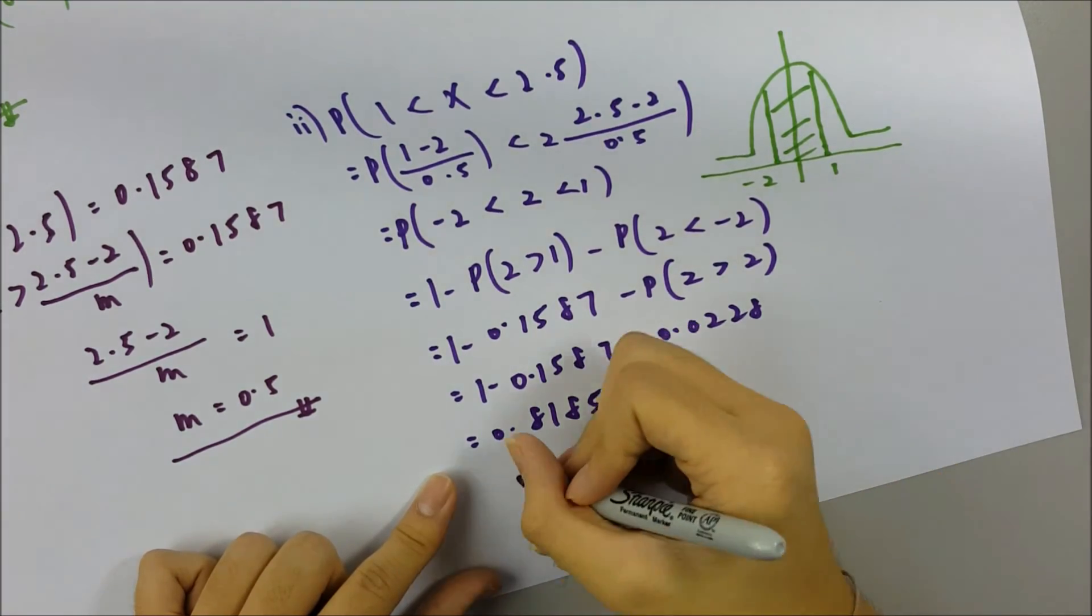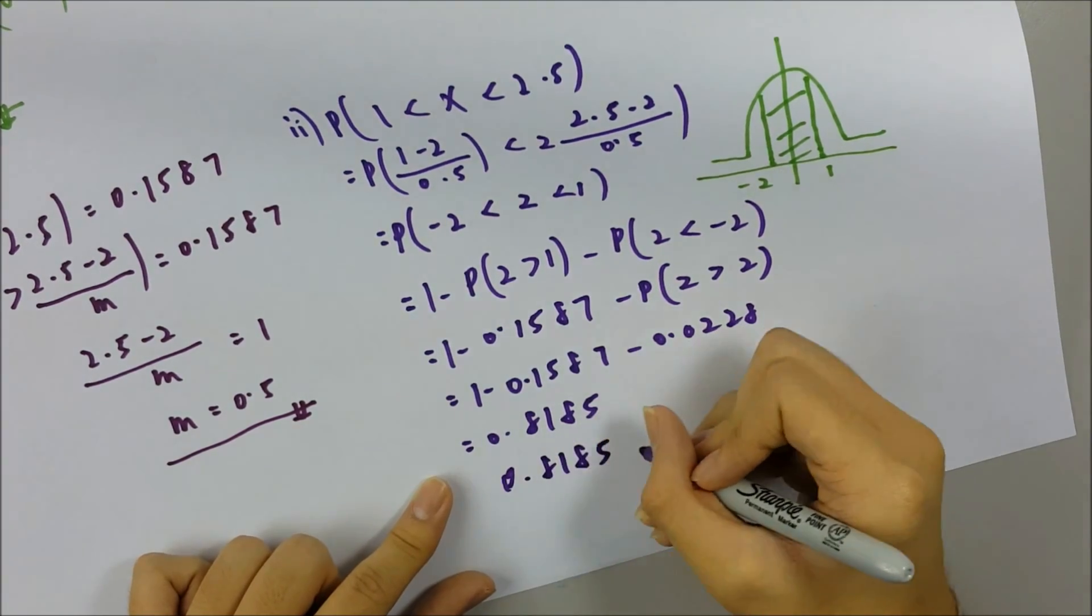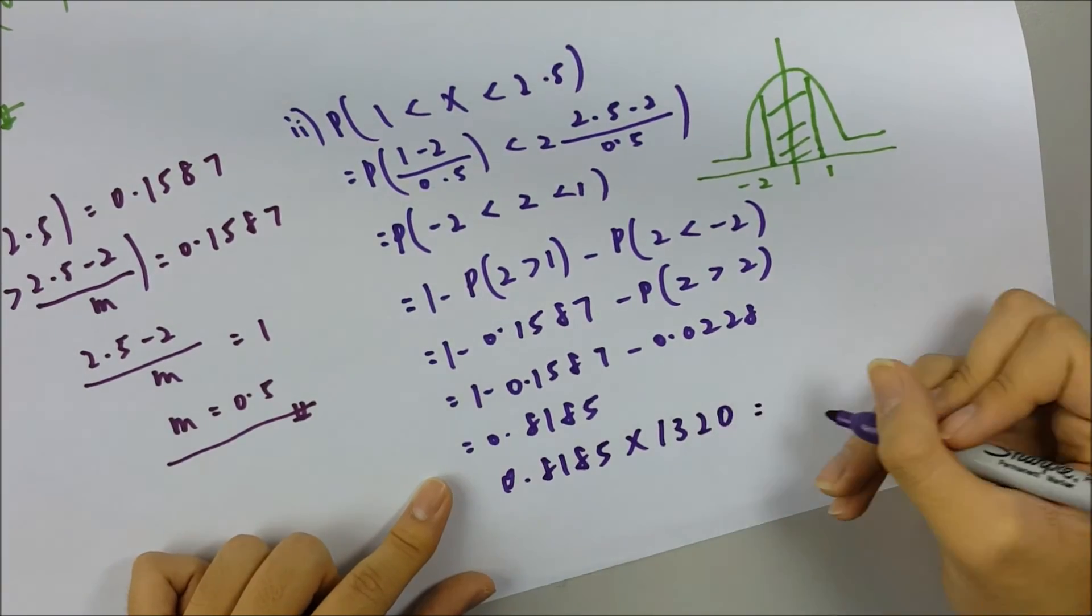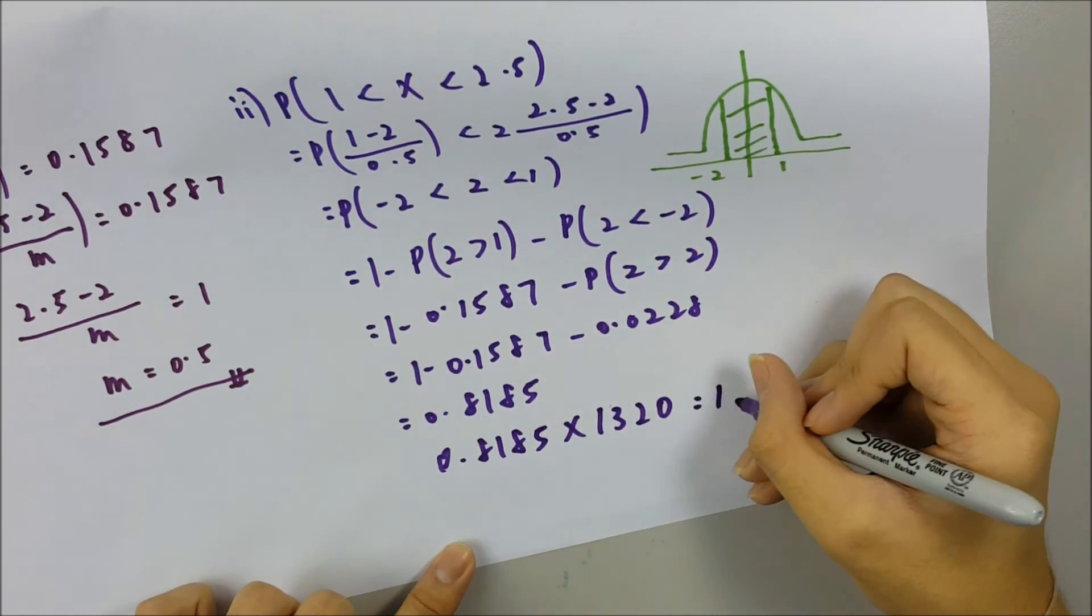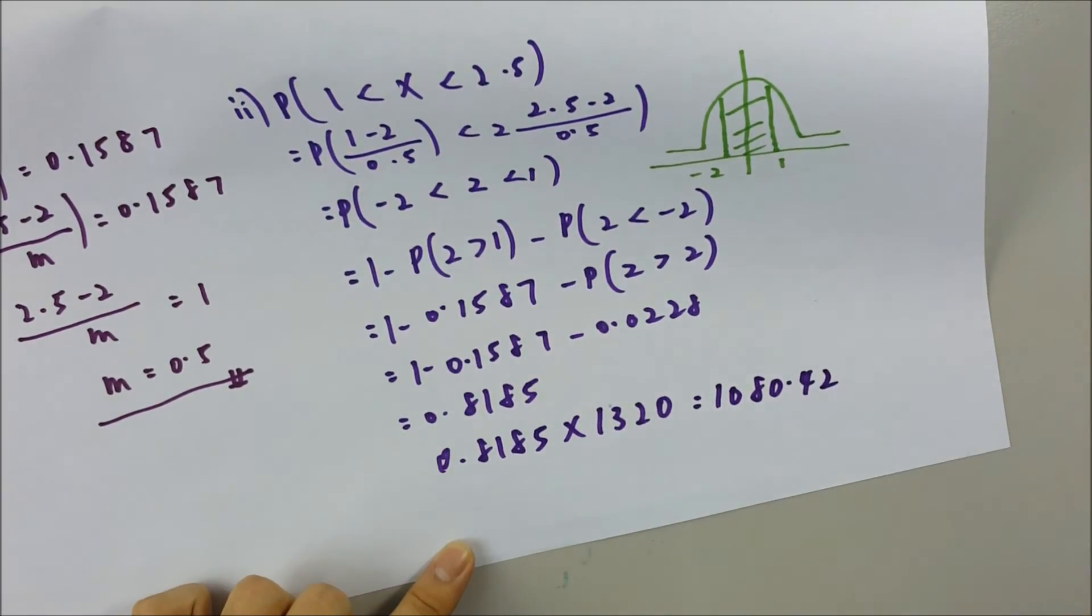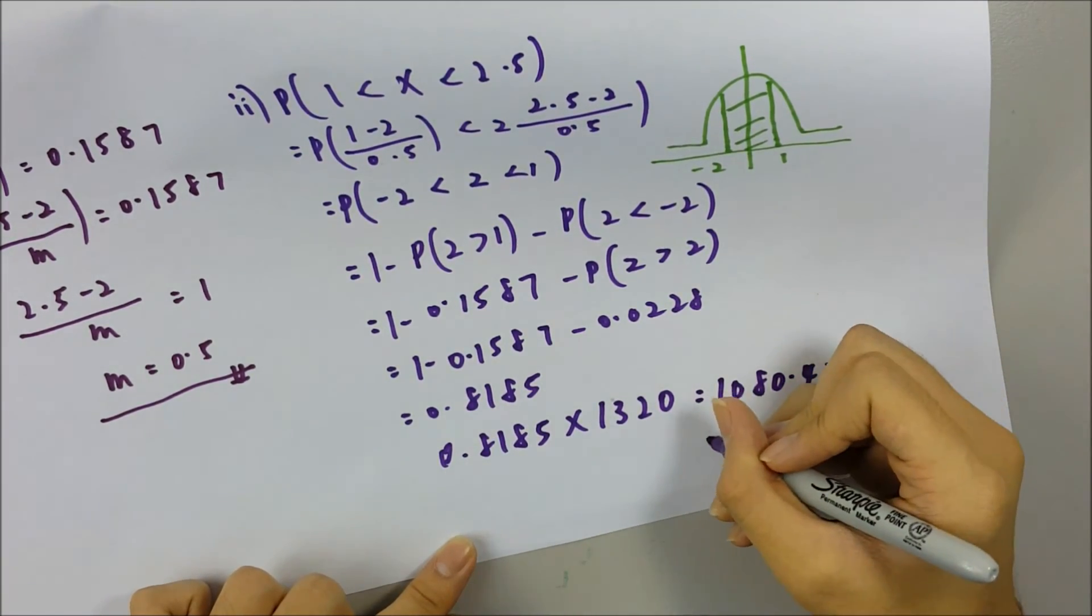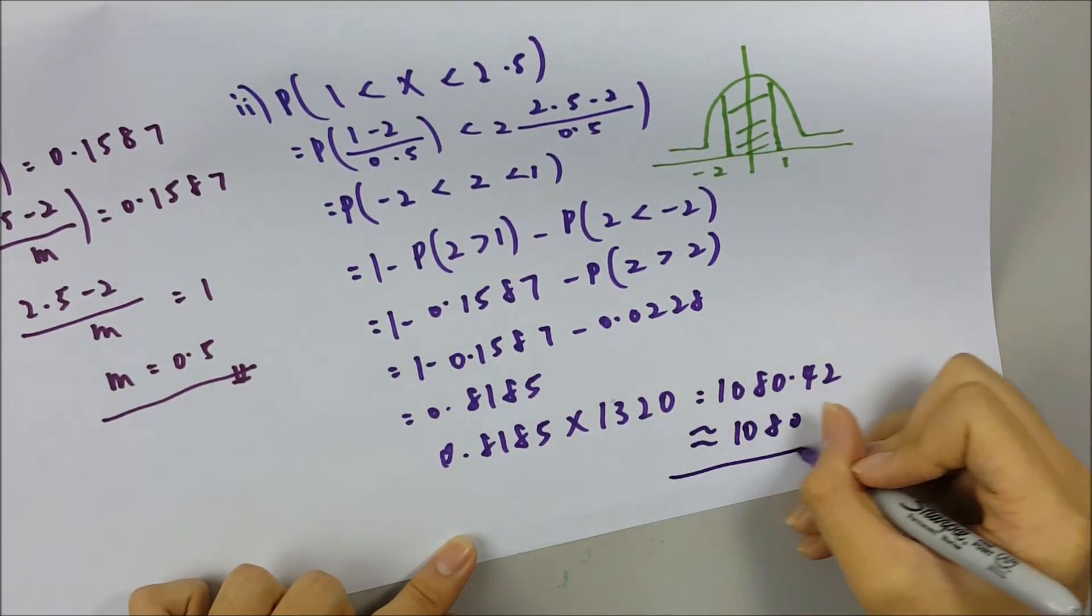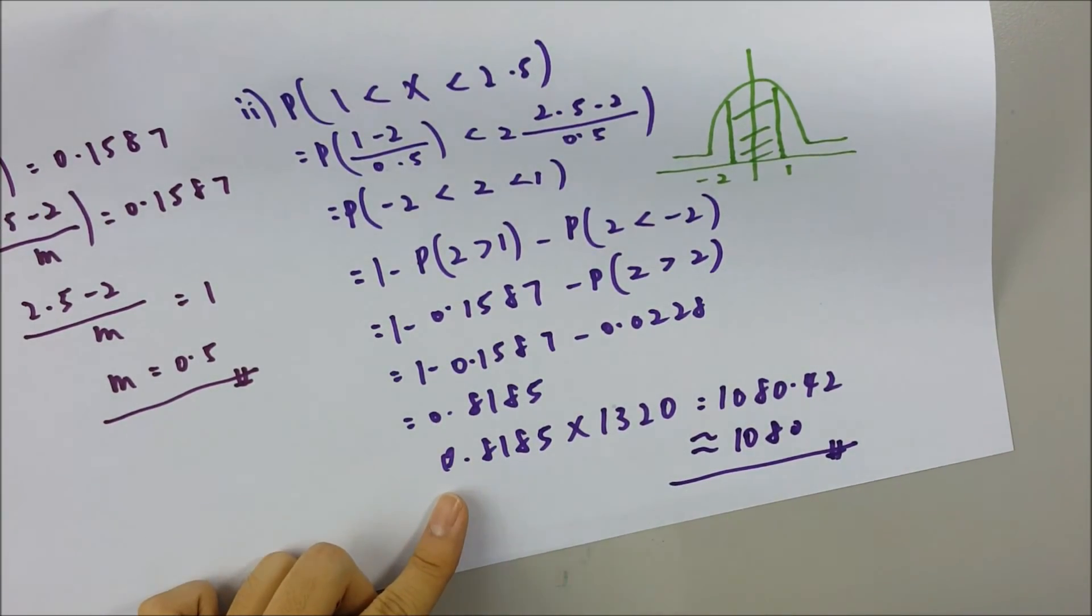So 0.8185 times the total number 1320. So you press the calculator and it equals 1080.4. A pineapple cannot have decimal places, right? So we have to round it off to 1080. So that's all for question number 9, Paper 2, Additional Maths, SPM 2016. Thank you.